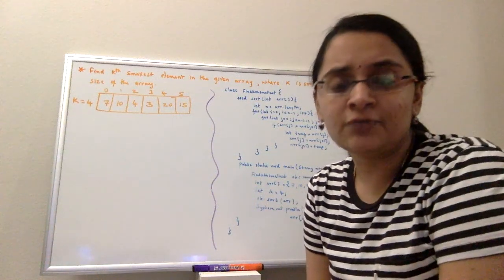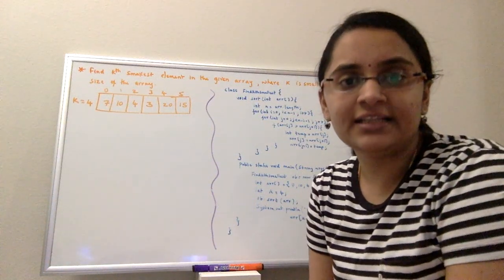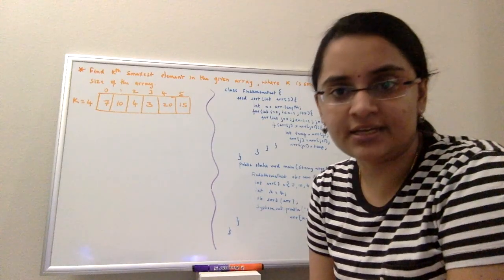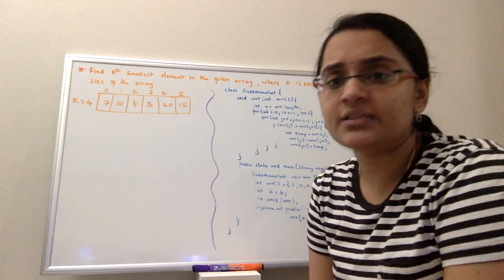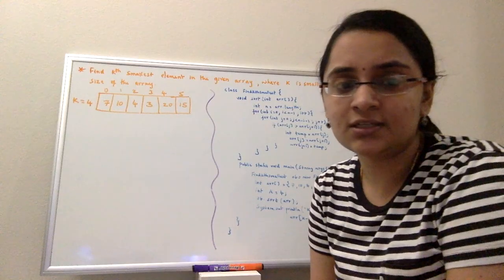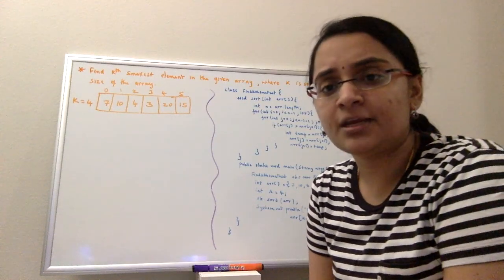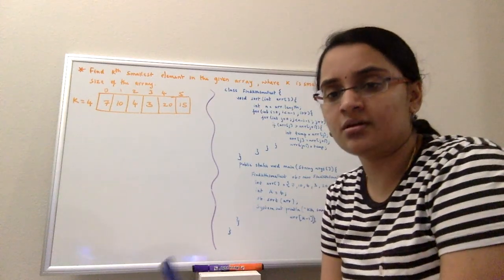Hi, now I'm here to solve a problem which is finding the kth smallest element in a given array where k is always smaller than the size of the array. The size of the array means the number of elements in the given array.